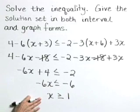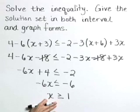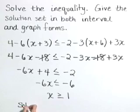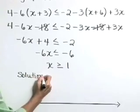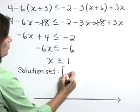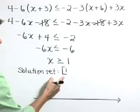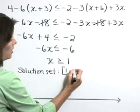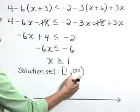So our solution set is all values x that are greater than or equal to 1. If we write this solution in interval form, then we would describe that solution set as all numbers from 1 inclusive, the bracket means including 1, up toward positive infinity.